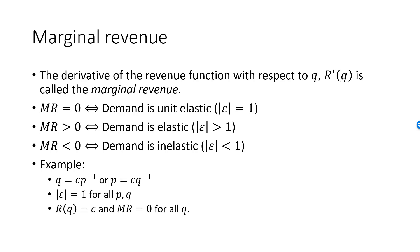The revenue function as a function of Q is C divided by Q times Q, which is equal to the constant C, and the marginal revenue is equal to zero for all quantities. This is all consistent with the second bullet point: marginal revenue is equal to zero if and only if demand is unit elastic.